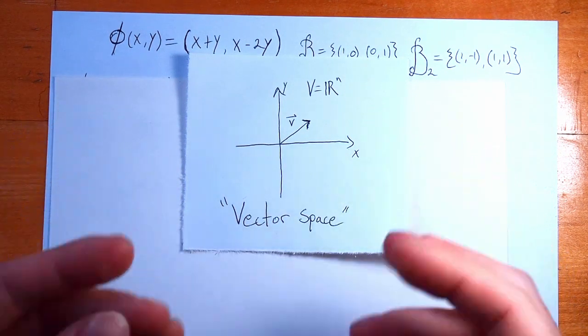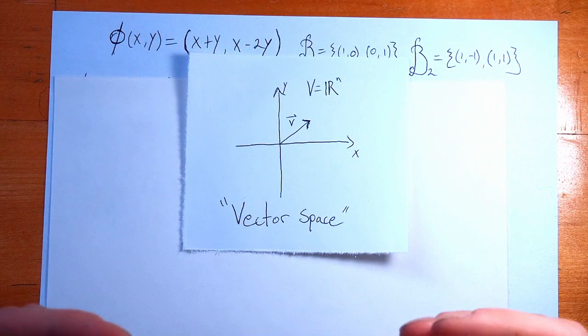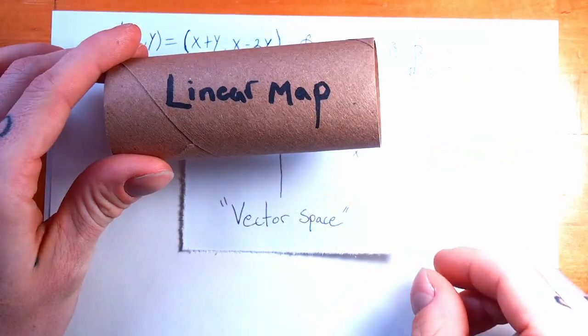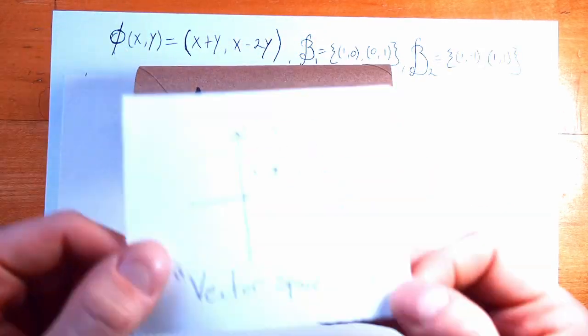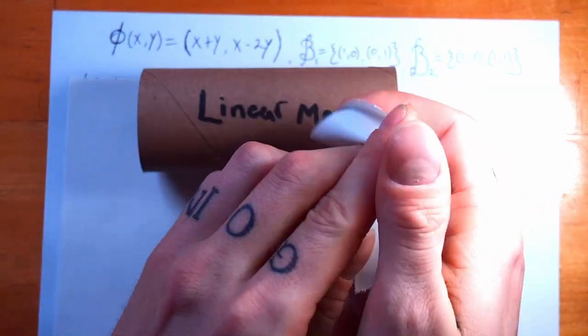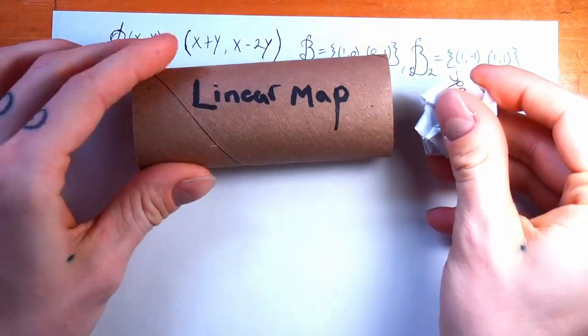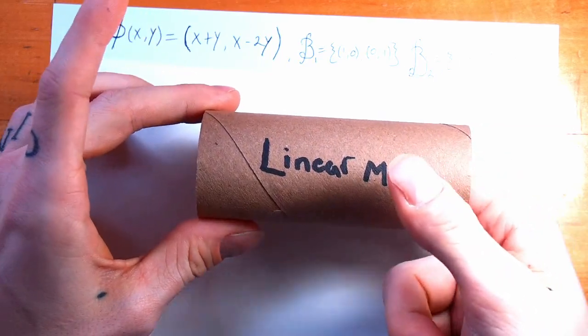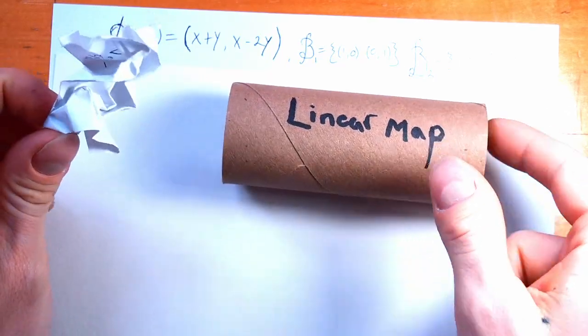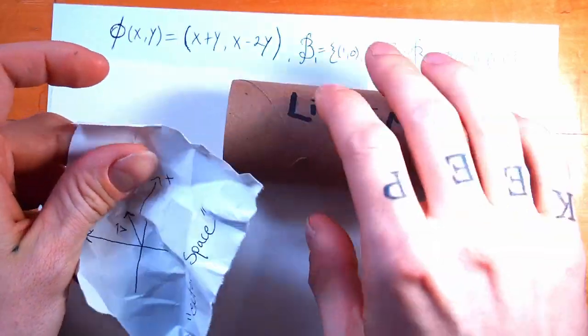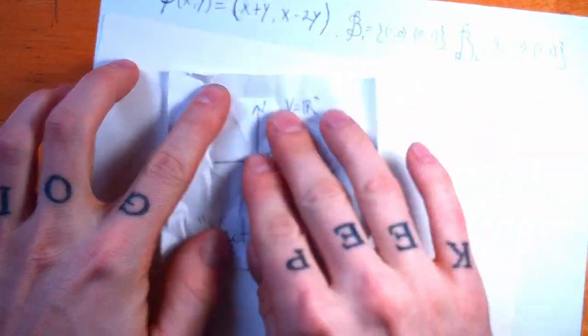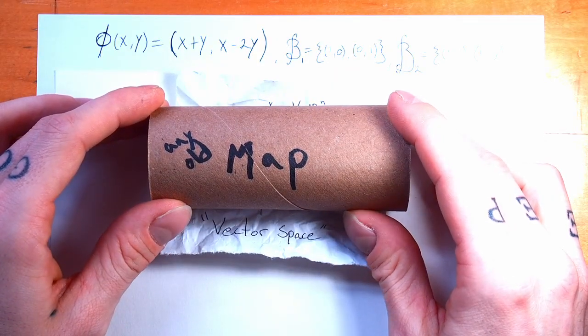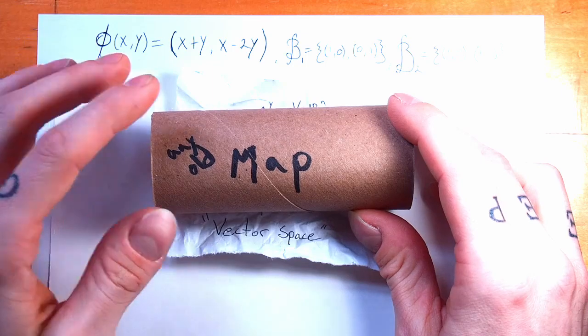The numbers that you would write down, the coordinates might be different, but it's the same vector space. In fact, I happen to have a linear map right here. Let's see what happens when we take our vector space and run it through the linear map. All right, so we put our vector space through here. Oh, and look what comes out the other side. Oh hey, it's still a vector space. Cool, everything's all right.